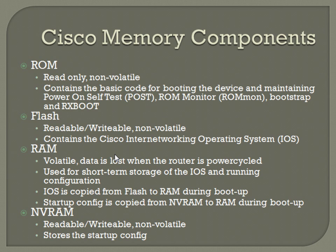This is actually kind of an important slide. Understanding what the various Cisco memory components are and where the configs, the IOS, and all those things are located is pretty important to being able to troubleshoot — especially if you're getting a failure as the router's powering up, or it's coming up but you're not seeing the config you saved. The four main types of memory in virtually every Cisco router are ROM, Flash, RAM, and NVRAM.